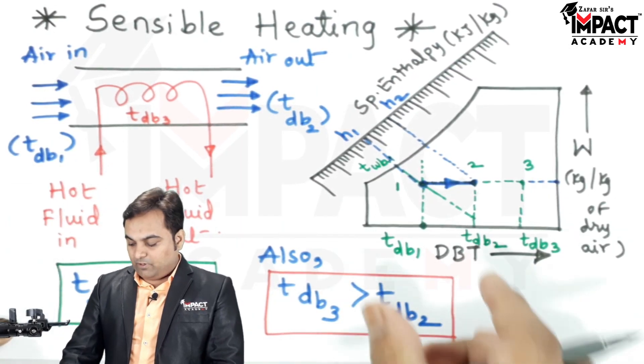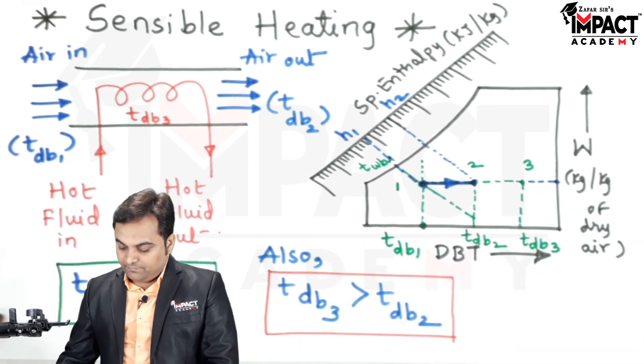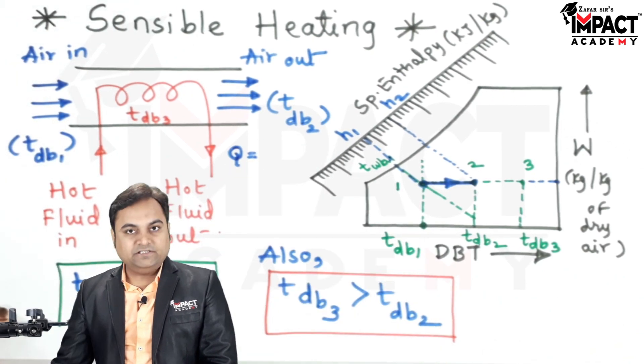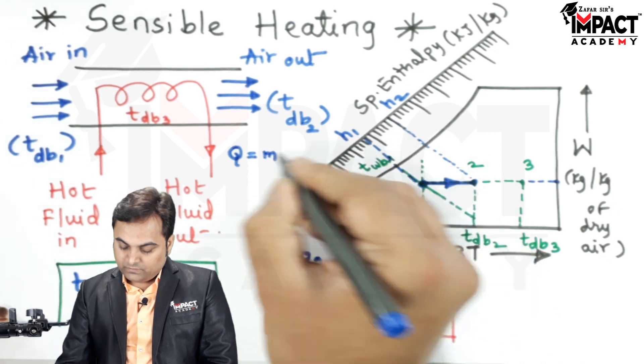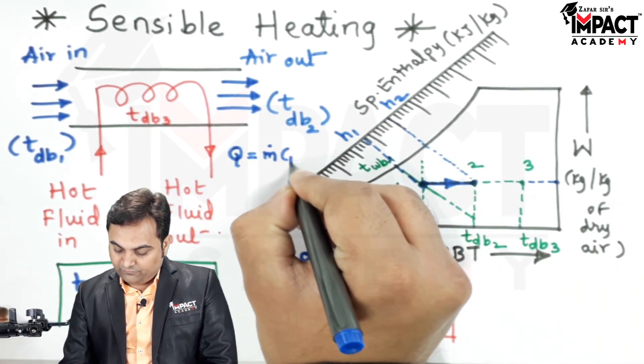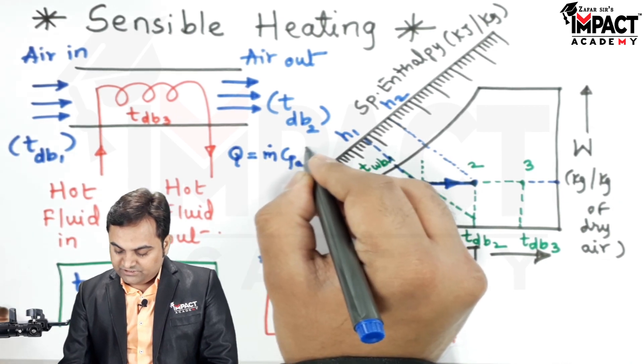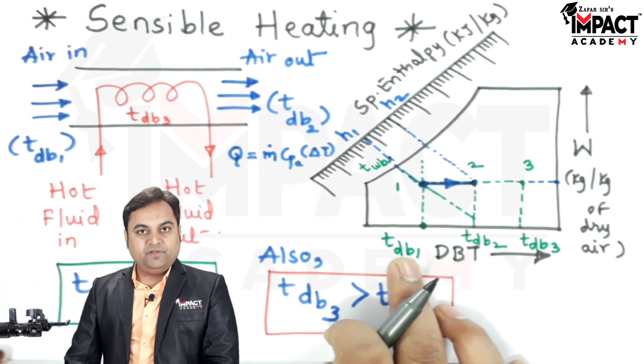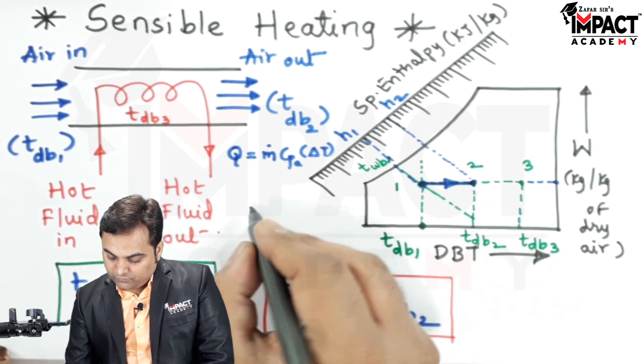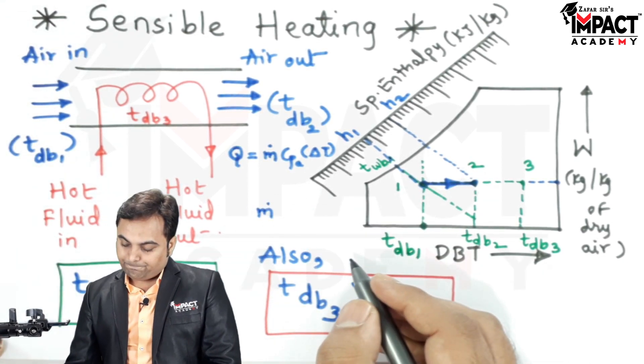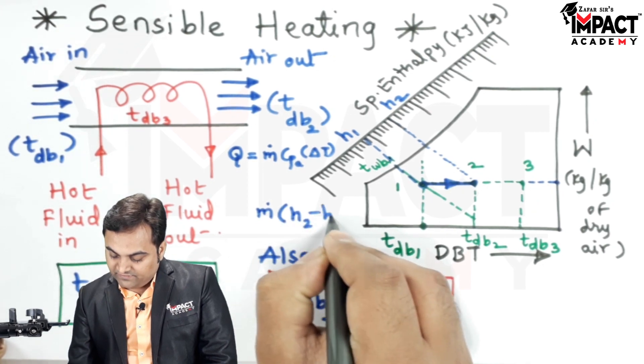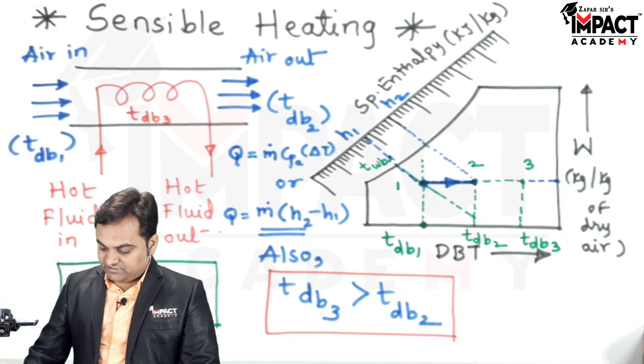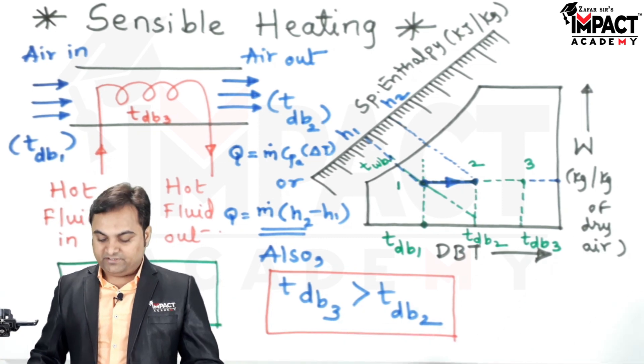So therefore the amount of sensible heat added can be given by, I am denoting it as q, and it will be equal to the mass flow rate of air, specific heat of air, into the temperature difference, basically that is delta t, and it is t_db2 minus t_db1. Similarly, in the form of enthalpy it would be m dot into the change in enthalpy, which is h2 minus h1. So in this way we can get the amount of heat added during the sensible heating process. So in short, that was a video regarding the sensible heating.